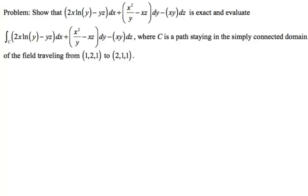Okay, in this video we are going to work on a problem that has a slightly different wording. So it says show that 2x natural log of y minus yz dx plus x squared over y minus xz dy minus xydz is exact, and then evaluate that line integral where c is a path staying in the simply connected domain of the field traveling from (1,2,1) to (2,1,1). So there's kind of a bunch of things going on here, first of which is dealing with this notion of an exact differential form.